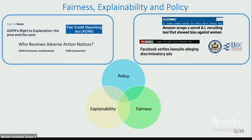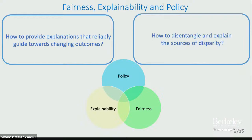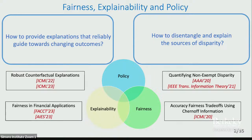Towards answering these urgent questions, what I propose are techniques that use information theory, statistics, and causality. In explainability, the questions I'm interested in are how do we provide not just any explanation, but explanations that can reliably guide towards changing the outcome of a model? And in algorithmic fairness, the kind of questions I've been looking into is how do we quantify not just disparity, but the sources of disparity — like which feature or attribute is actually responsible for causing the disparities in the model? In today's talk, I will discuss some of my recent works in this area.